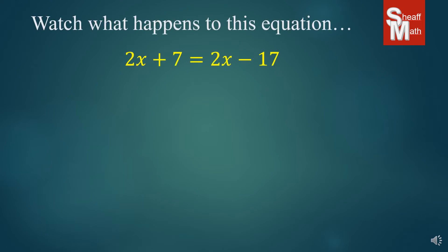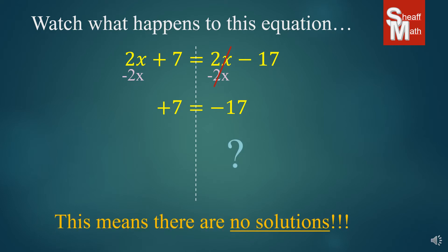Okay. Take a look at this question. If I were to get the x's on one side, I would subtract 2x. Well, what happens? The x's actually eliminate, and I end up with 7 equals negative 17. What do you think about that? Well, this does not make any sense. 7 does not equal negative 17, and so this is not a true statement.